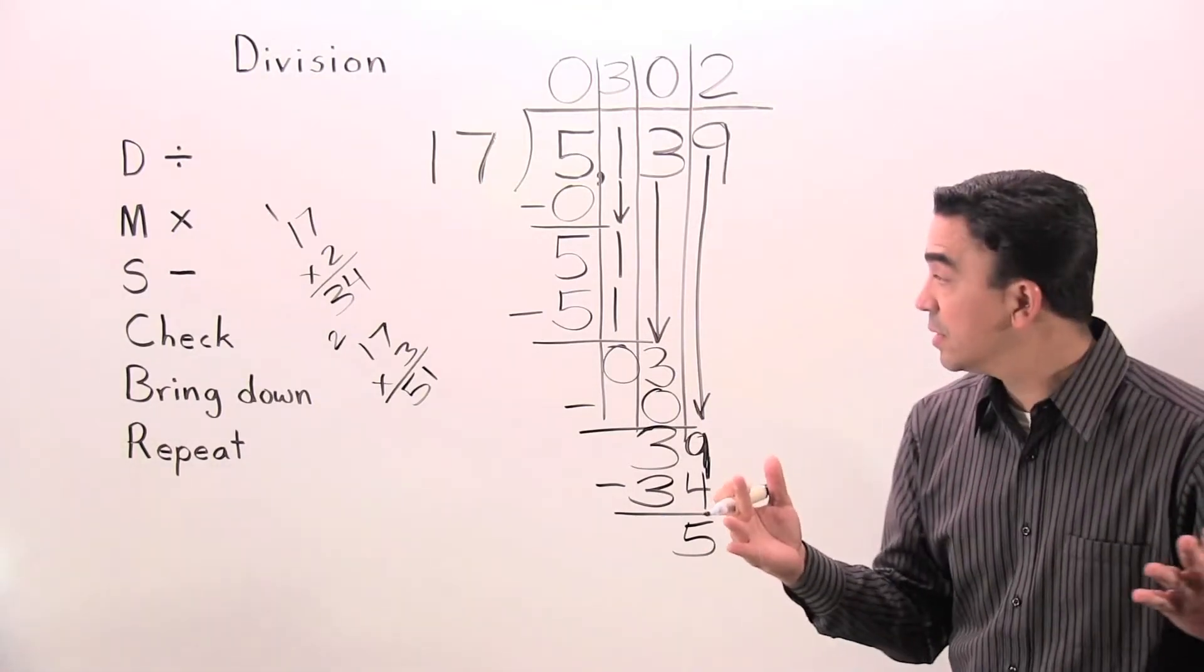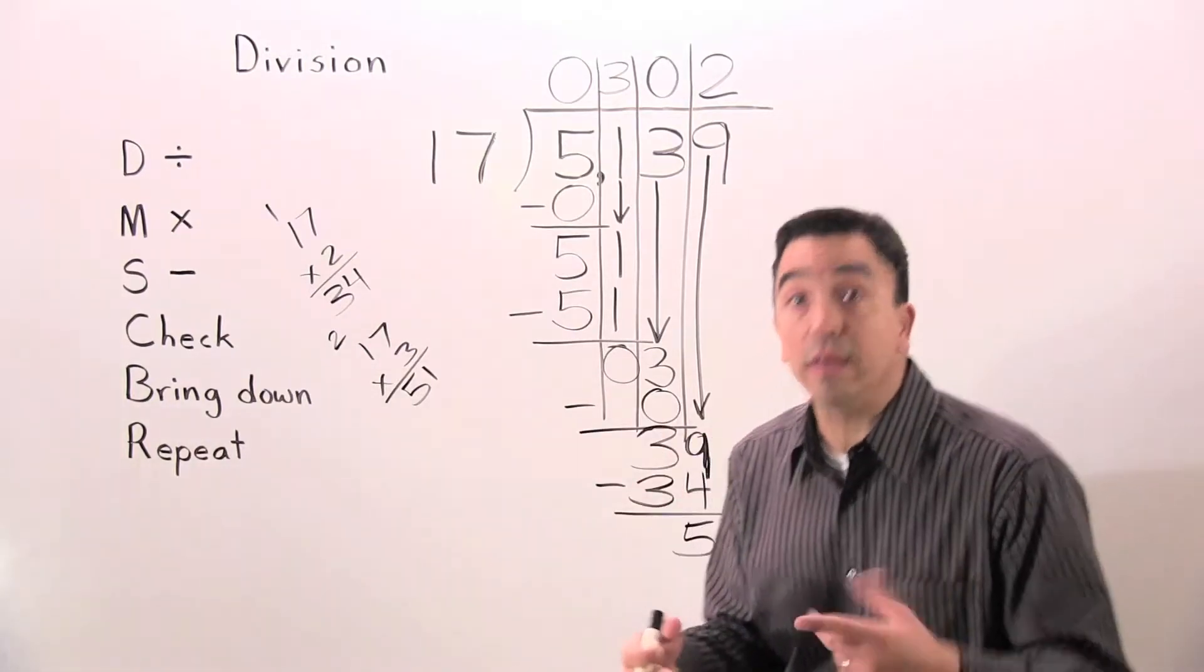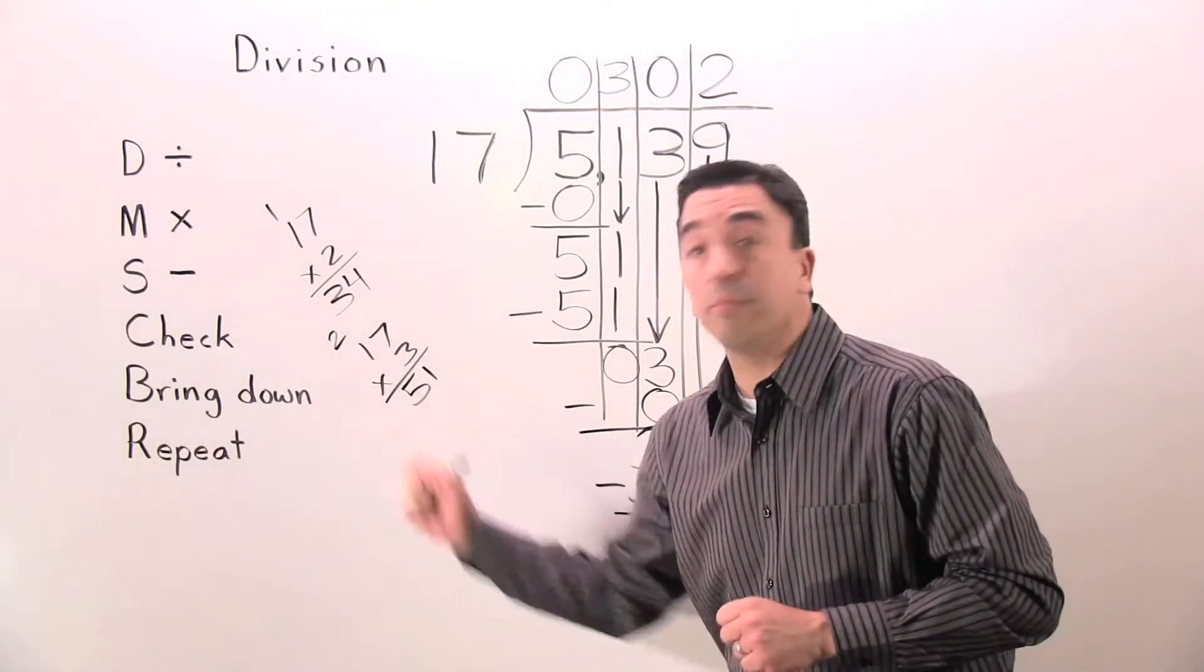Next step, check. 5 is less than 17. Keep on going. Next step, bring down.